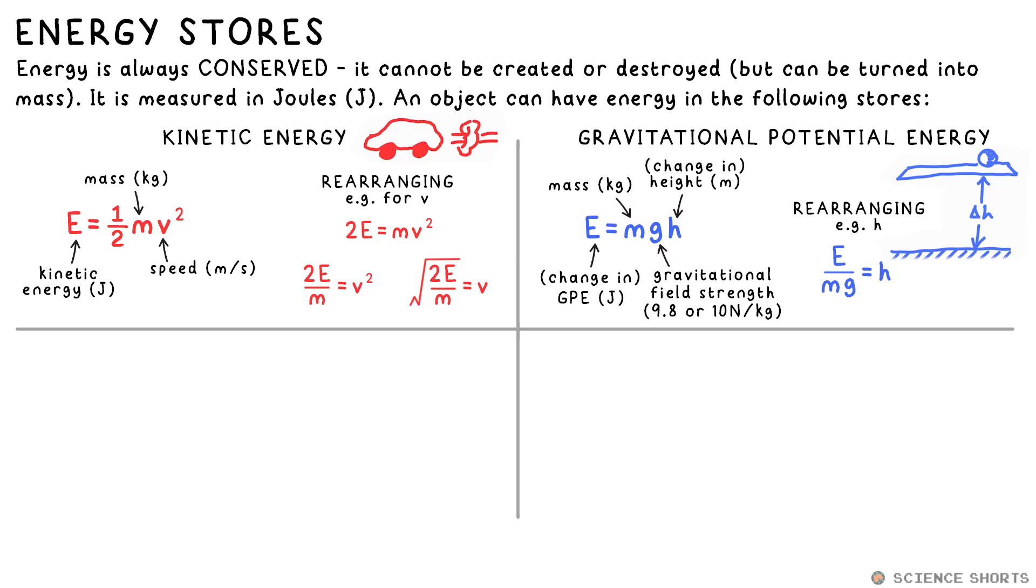Put simply, the higher off the ground an object is, the more GPE it has, and the more GPE it has available to lose if it starts to fall.